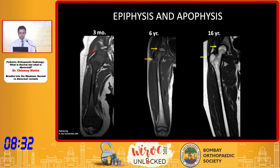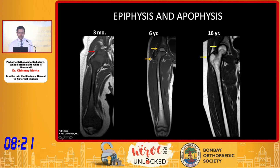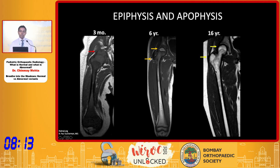Let's look at how the epiphysis evolves as the child grows. At three months of age it is composed of red marrow, so it is isointense to muscle. At six years there is fatty marrow in the epiphysis, so it becomes brighter on T1 images. At 16 years it is fused and the apophysis and epiphysis look similar in intensity to the metaphysis and diaphysis.